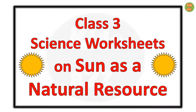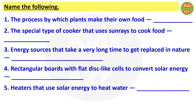Class 3 Science Worksheets on Sun as a Natural Resource. First worksheet: Name the following. Question 1: The process by which plants make their own food is called Photosynthesis.